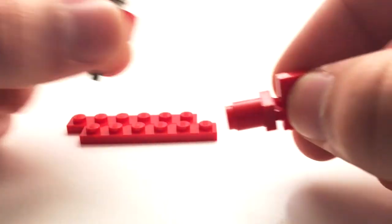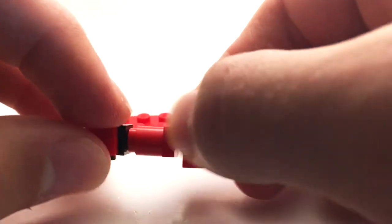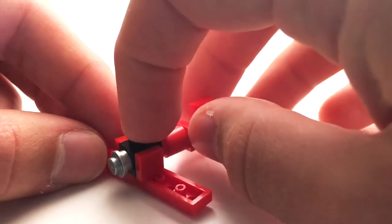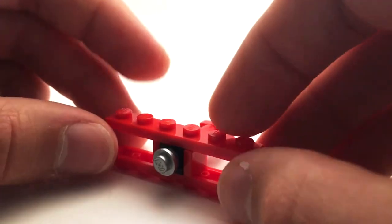That just slips onto that stick that was through the body there. And then the wings are just these one by six plates that come on top.